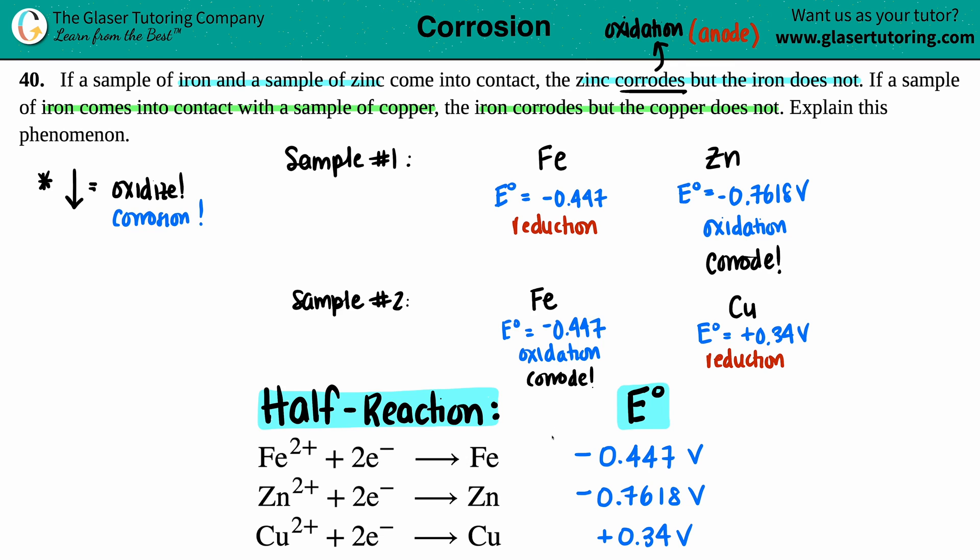The iron corrodes but the copper does not, and that's what we got. So just know that the general idea is that the lower the value you have on your half reactions for a spontaneous reaction, you're going to be the oxidizer and that's the corroding one because that's at the anode.